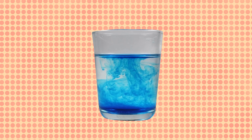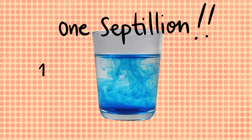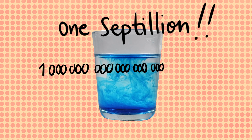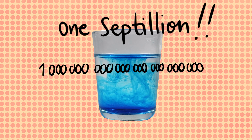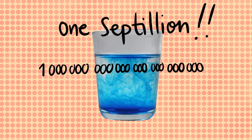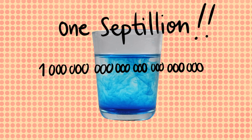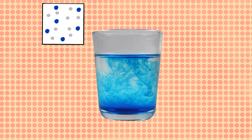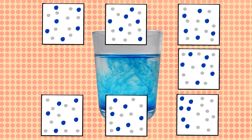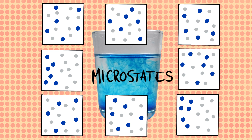In a glass like this one, there are around one subtillion particles, meaning water molecules and ink pigments. So there is an incredibly huge number of possible ways to rearrange them. Each different arrangement is called a microstate.